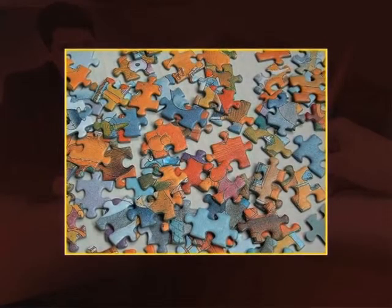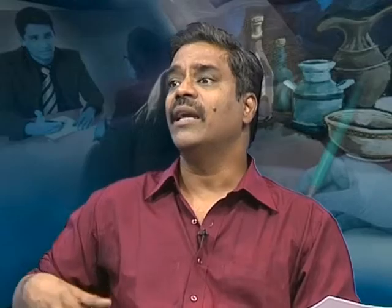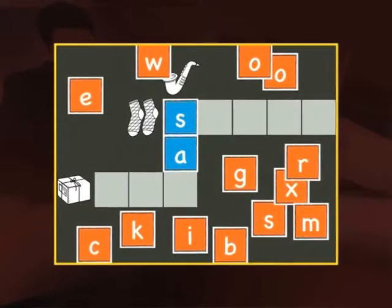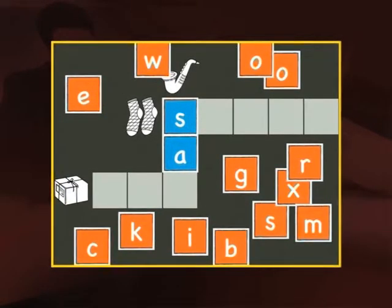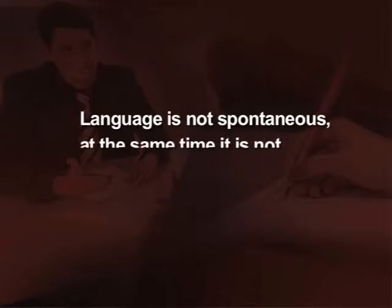We select details and create a model out of those countless details by piecing them together as we do in a jigsaw puzzle. That is what Wittgenstein keeps emphasizing — it is not something that happens naturally. We are constantly selecting and arranging words like a puzzle in order to describe a picture. It is not a spontaneous activity; language is not spontaneous. At the same time, it is not merely an imitation.